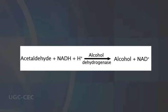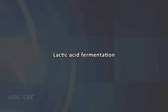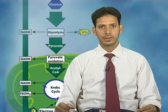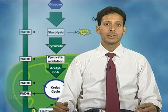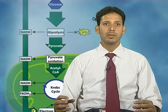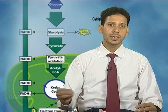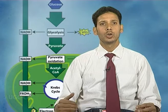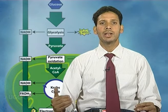This process is catalyzed by the enzyme alcohol dehydrogenase. In lactic acid fermentation, carried out by lactic acid bacteria such as Lactobacillus, some fungi, and vertebrate muscle cells, pyruvic acid from glycolysis receives hydrogen from NADH to form lactic acid and NAD+.